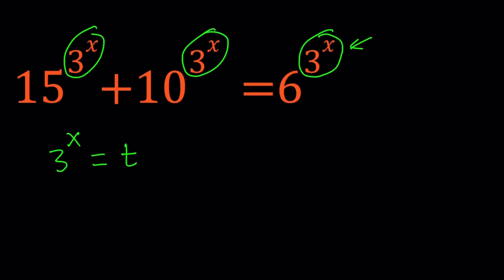Let's go ahead and set 3 to the power x equal to t. T is one of my favorite variables and also one of my favorite drinks. Anyways, that's a different story. So now this turns into 15 to the power t plus 10 to the power t equals 6 to the power t.